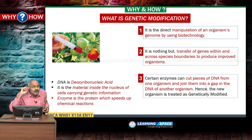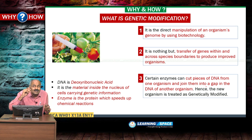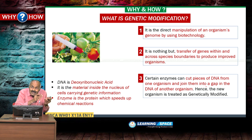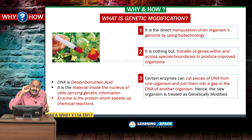Genetic modification is the manipulation of an organism's genome using biotechnology. Here, transfer of genes takes place to produce improved organisms. Some pieces of DNA of one organism are cut and introduced into the DNA of another organism. DNA — deoxyribonucleic acid — is the material inside the nucleus of cells carrying genetic information.